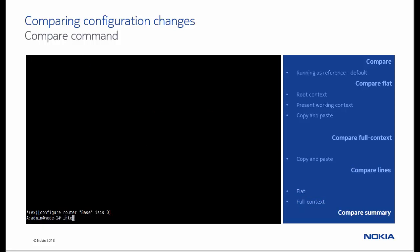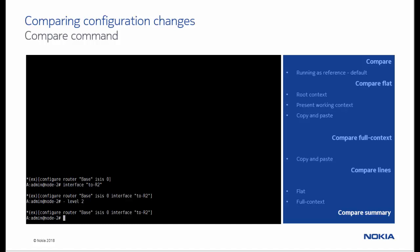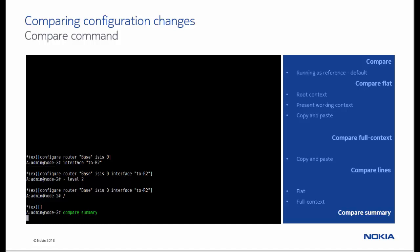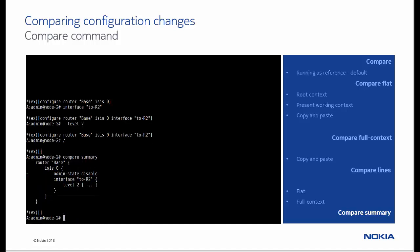Next, we use the compare command with the summary option. First, we delete the level 2 configuration. The compare command output is now suppressed, and the differences are replaced with a tilde character. Any deletion is also suppressed to its highest container, and is shown with three dots in braces.